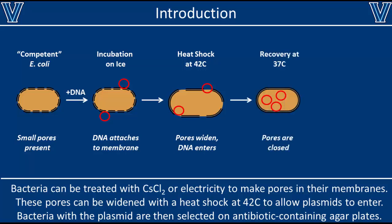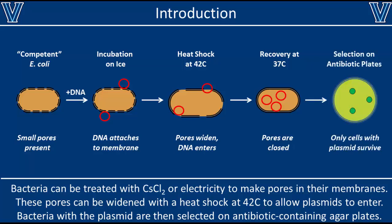We then cool the cells back down and allow them to recover in nutrient-rich media for about an hour. During this step, the cells seal up the pores through which the DNA entered. At this point we'll have some cells containing the plasmid, but also other cells which did not take it up. We select for cells containing the plasmid by putting them all onto antibiotic agar plates. Since our plasmids contain a gene for antibiotic resistance, these plates will kill any bacteria that do not contain the plasmid. Any colonies that grow on this plate consist entirely of bacteria containing our plasmid.